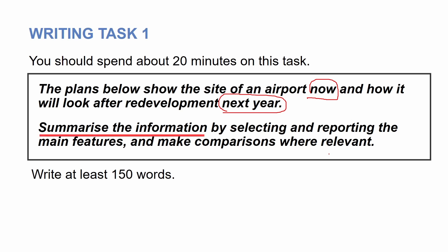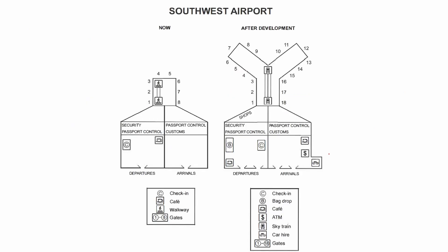As you know, the instruction is always the same — we need to summarize the information by selecting and reporting the main features only, and make comparisons where relevant. Step two is to understand the plans. One of them is about the present; the other is about the future. If you've watched the previous videos, you know that you should not be worried about vocabulary at this stage. Simply put a tick for places that will change and a cross for places that will remain the same.